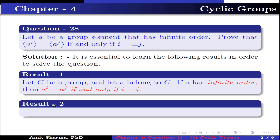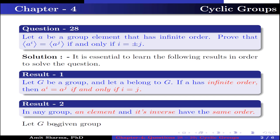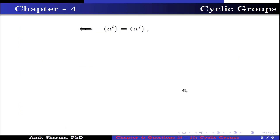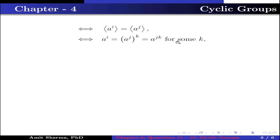Result number 2: in any group, an element and its inverse have the same order. Now, let g be a given group and a belong to g such that the order of a is infinite. It is given that the group generated by a to the power i equals the group generated by a to the power j. This implies a to the power i equals a to the power j to the power k, which equals a to the power jk for some k.